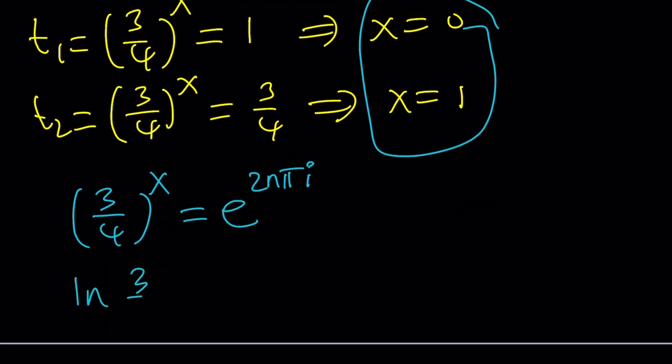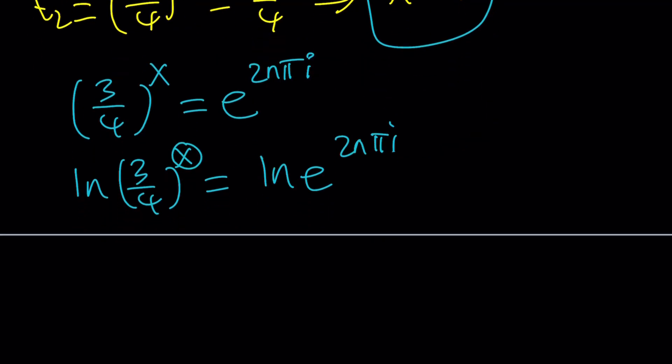ln 3 over 4 to the power of x equals ln e to the power of 2n pi i. And then from here, bring the x to the front and divide by ln 3 fourths, because this is going to be 2n pi i, divided by ln 3 fourths. And now, this is a solution, and n is an integer, of course. So, if you replace n with different integer values,